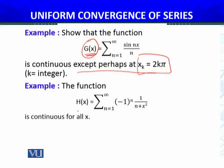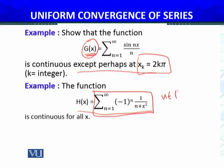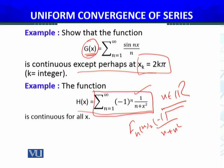Similarly, by the Dirichlet test, we proved that this series with terms fn(x) = (−1)ⁿ / (n + x²) is also uniformly convergent for all x belonging to the real numbers. Applying the same result — the series is uniformly convergent and converges to let's say h(x) — since these functions are continuous throughout the domain x ∈ ℝ, we conclude that h(x) will be continuous for all x belonging to ℝ.